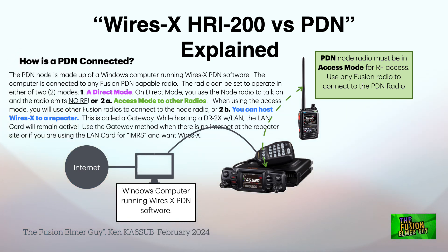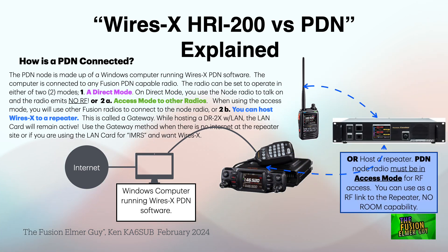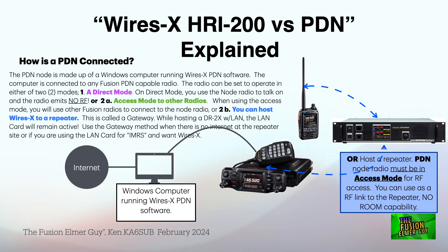This is using it in access mode. What if you want to host a repeater — you want WIRES-X on a repeater? You can do that with this. You can RF that signal right up to the repeater, and like with WIRES-X, you can use the mobile radio or an HT radio through the repeater to control the PDN node. That's a very doable thing.